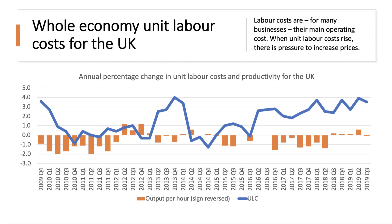The blue line on this chart shows the annual percentage change in unit labor costs, and in the last few years labor costs have been rising by around three percent, suggesting some cost pressures for businesses. One reason for that is that productivity growth has been fairly weak — you can see the orange bar showing the rolling percentage change in productivity (output per hour), which has been fairly flat or negative. The weak growth of productivity has been one of the great puzzles of the last ten years, and lower productivity increases unit labor costs.